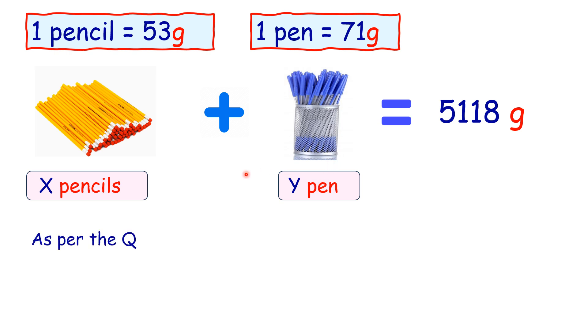Now, as per the question, the weight of x pencils will be 53 times x and weight of y pens will be 71 times y, and their weight together is 5118.